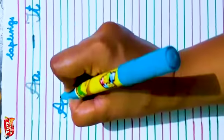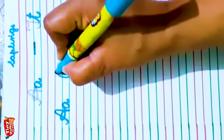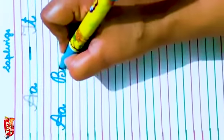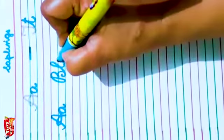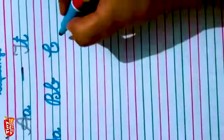A, capital A, small a. B, capital B, small b. Now capital C, small c.